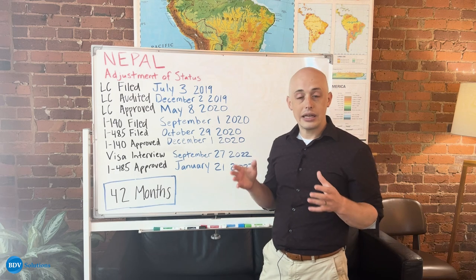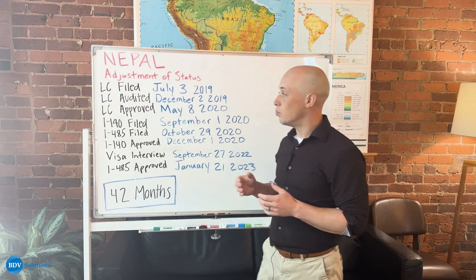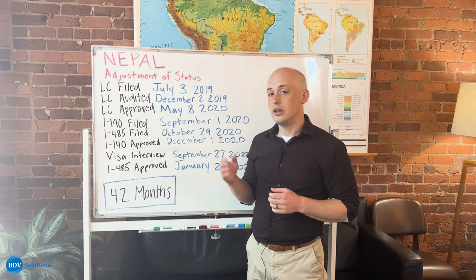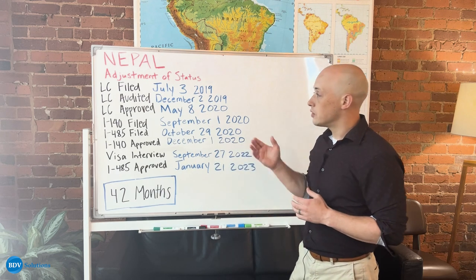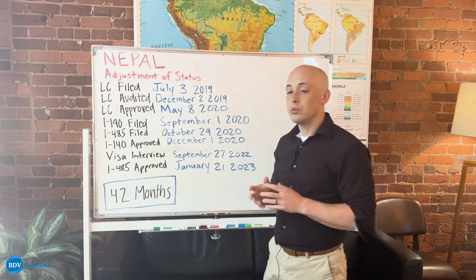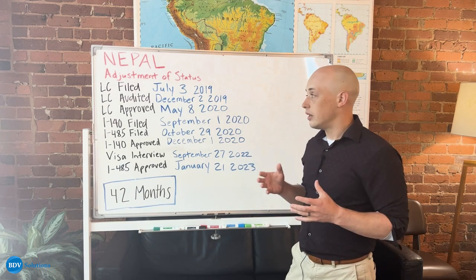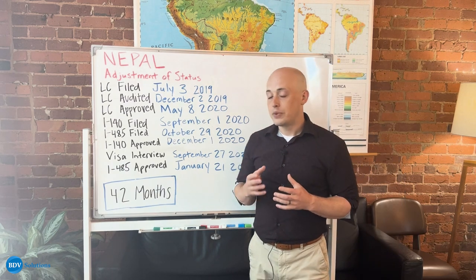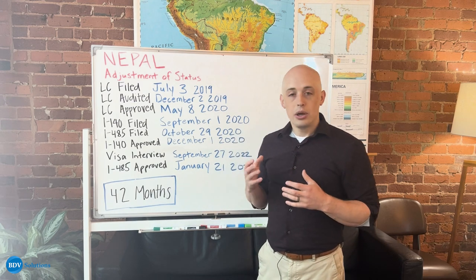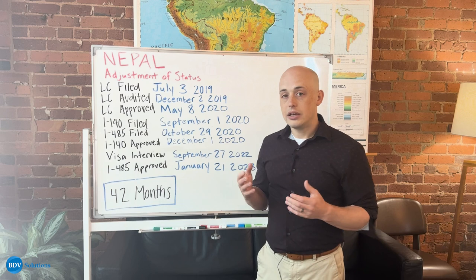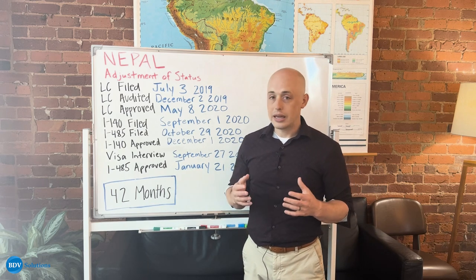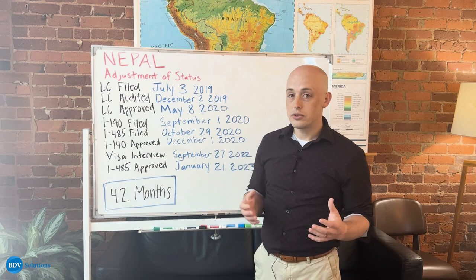As with every EB3 process, you begin by filing a labor certification, or an LC, with the Department of Labor. This person's LC was filed in July of 2019. It received an audit in December of 2019, and an audit might sound scary or daunting initially, but for those of us here at BDV, it is a very routine procedure. It doesn't mean anything is wrong with your case. It doesn't mean anything is wrong with your sponsor.